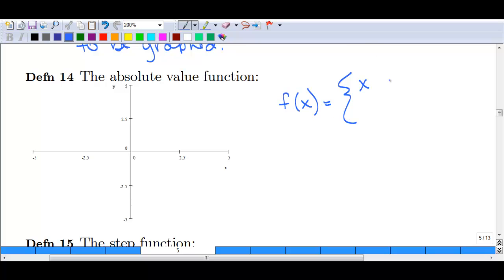So, for the absolute value function, we get the line y equals x for x greater than or equal to 0. And we get the graph negative x for x is less than 0.